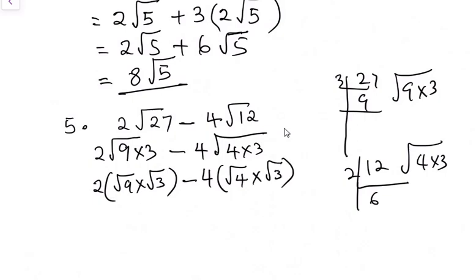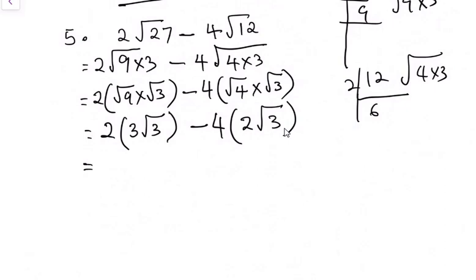So solving this further, we're going to have 2. Square root of 9 is 3 multiplied by √3, and 4. Square root of 4 is 2 times √3. Now solving further, we're going to remove the bracket or the parenthesis. With these 2 outside, we're going to have 2 times 3, 6√3 minus 4 times 2, 8√3.